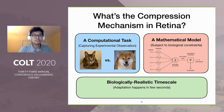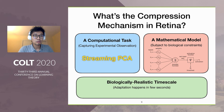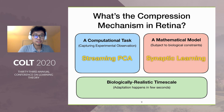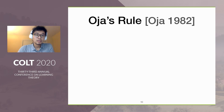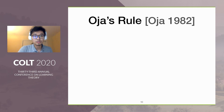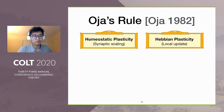To sum up, to understand the compression mechanism in retina, we recognize streaming PCA as a good computational task and use a synaptic learning rule in a linear neuron model as the model we work on. The mechanism also has to be on a biologically realistic time scale, in the sense that it has to have tiny dependency on the number of photoreceptors. The synaptic learning rule we consider here is the Oja's rule, proposed by Oja almost 40 years ago.